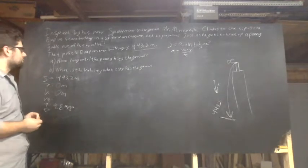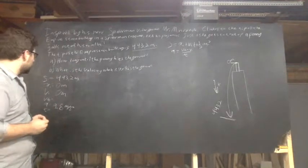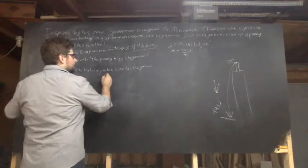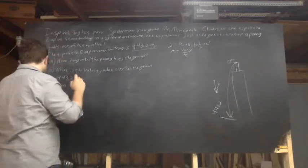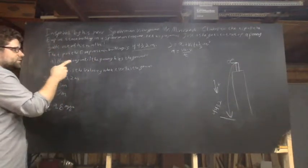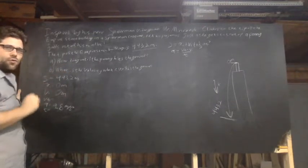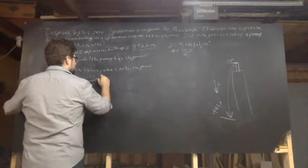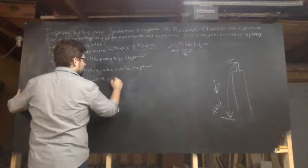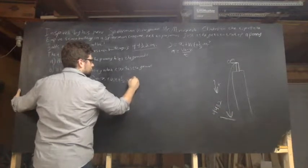All right, so I want to know how long does it take the penny to hit the ground? Well, S equals XI plus VI T plus one half A T squared. I know S, I know XI, I know VI, and I know A, so I can solve quite easily for T. So S equals XI plus VI T plus one half A T squared.